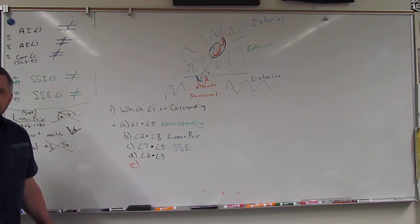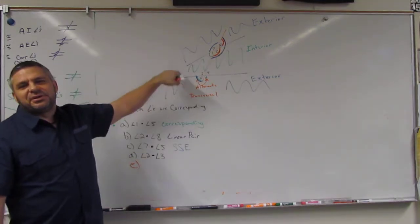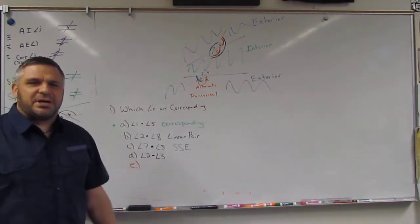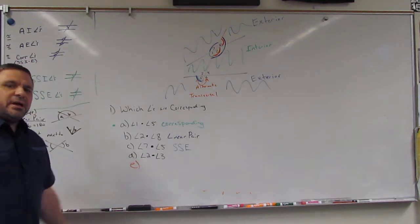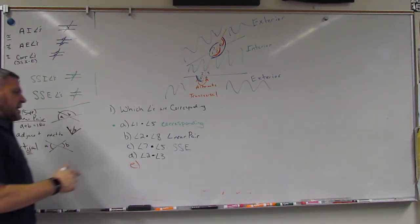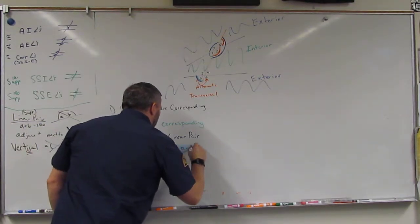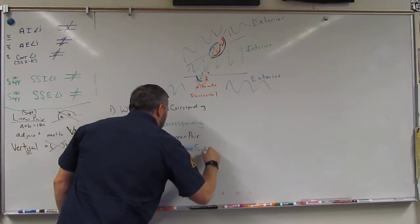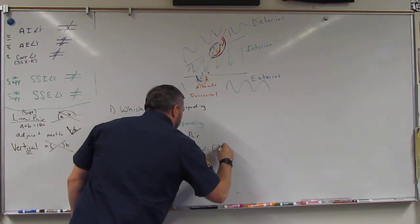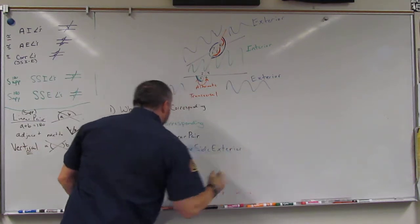Alright, so same side exterior. So would same side exterior be congruent? Oh, well it only matters if these are parallel, right? And these aren't parallel, so we're good. We won't talk about congruent and all that. We just want to label them. Alright, so these are same. So let's write it out: same side exterior.